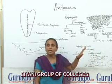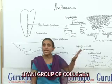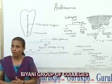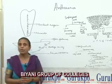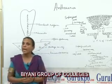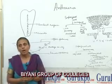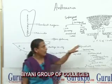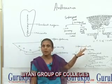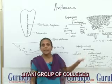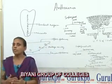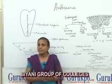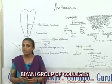The tuberculate rhizoids and scales, as you see in the diagram, are lacking in Anthoceros. The dorsal surface of the thallus may be smooth as in Anthoceros laevis, or it may be rough as in Anthoceros fusiformis. Now I move towards the vertical transverse section of the thallus, or the internal structure of the thallus.